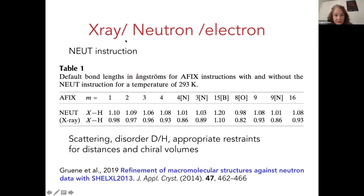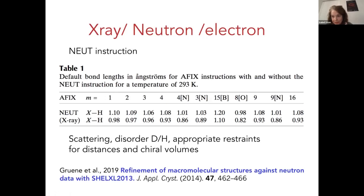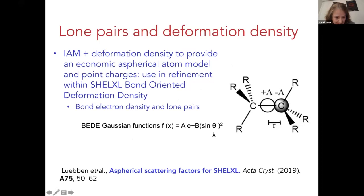You can refine against x-rays, neutron, or electron data. Here are the restraints derived by Tim Brüner et al. for hydrogen distances, which is something Kate Arrow has already been alluding to. You can also describe bond deformation with two Gaussians or model lone pairs for high-resolution refinement — when you don't have such high resolution that you could afford full Hirshfeld refinement.